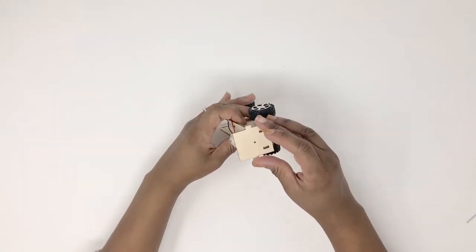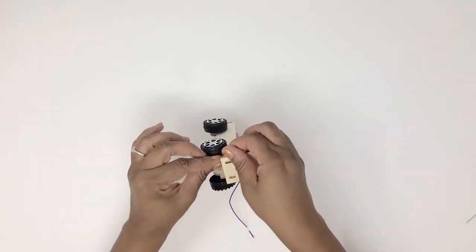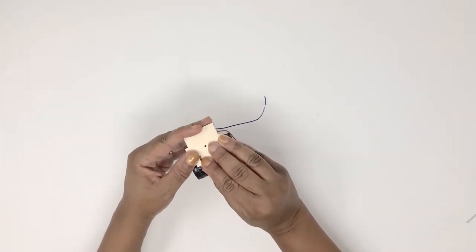Now we're going to attach the back of the car. Most people don't need glue, but if you find that this back keeps falling off then you can use a little bit of glue to keep it secure.